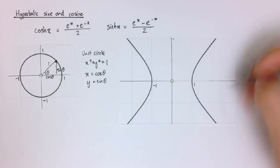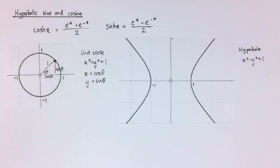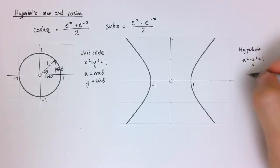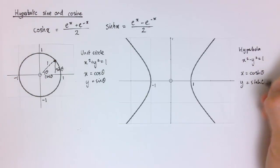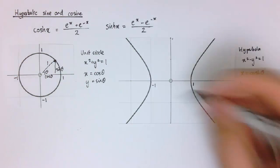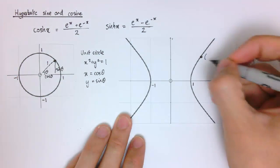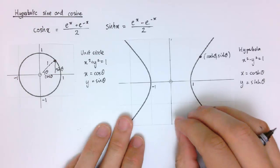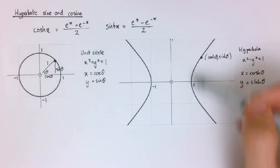Here is a graph of a hyperbola. The formula for this is x squared minus y squared equals 1. It turns out that the hyperbolic sine and cosine functions — if I did x equals cosh theta and y equals sinh theta — that would parametrize this hyperbola. If I took a point on here, there's some value of theta where that coordinate equals cosh theta, sinh theta, and that's true for every other point on the hyperbola. Though I should note this parametrization only gives you the right-hand side of the hyperbola.